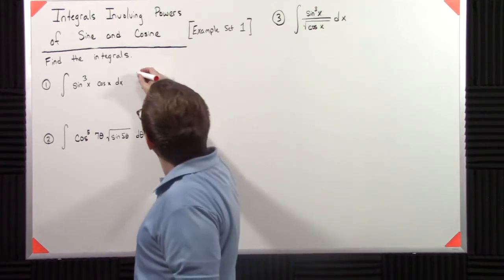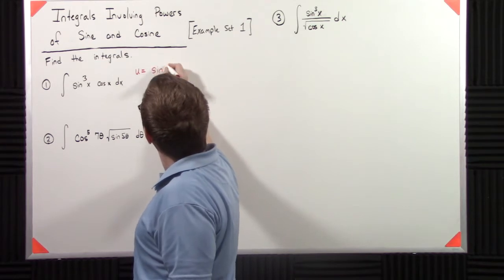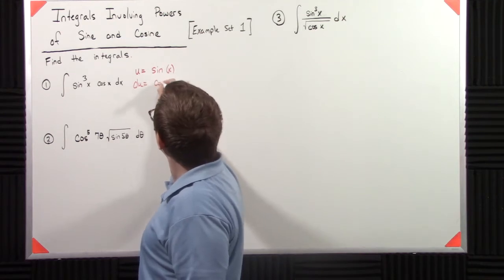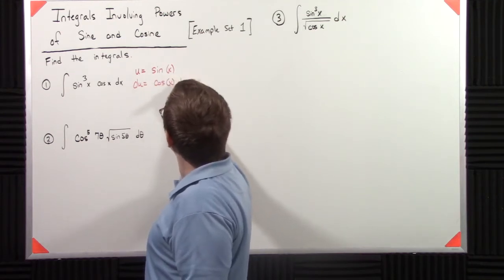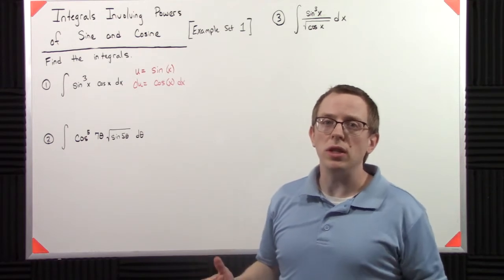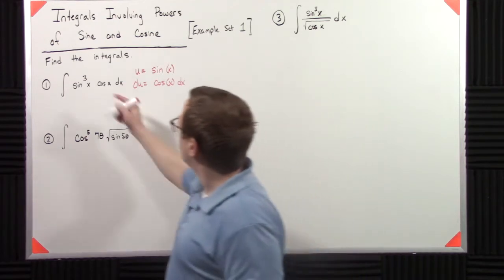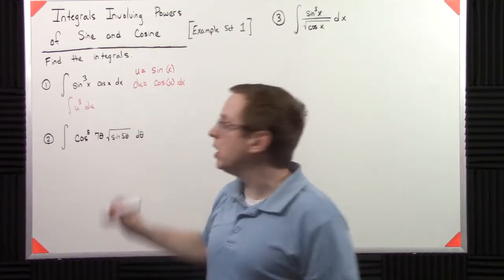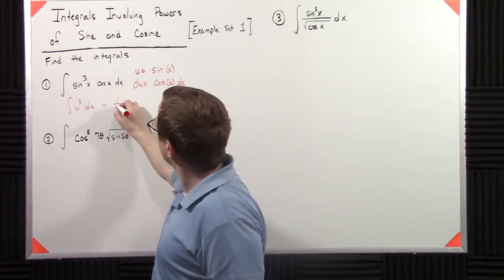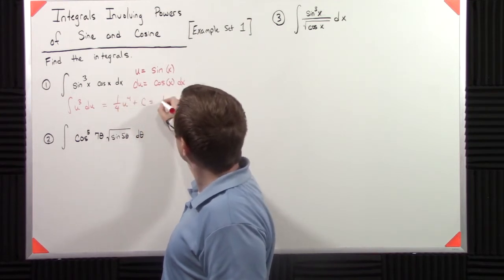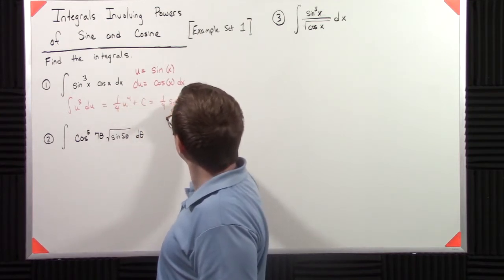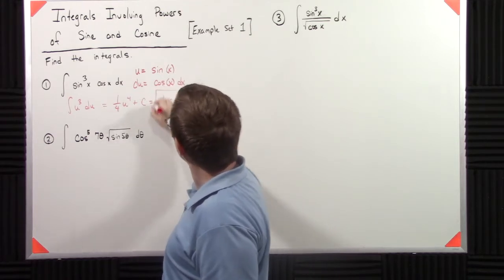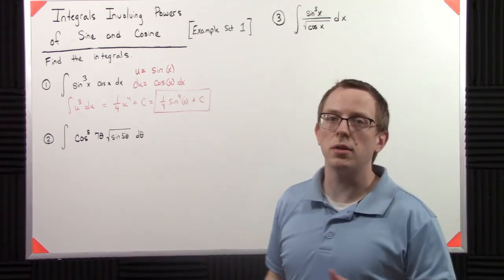What we can do on something like this is use a simple u substitution. We can say u is sine of x, du is cosine of x dx. And by using that substitution, we simply get u cubed du. We don't have to overthink this.